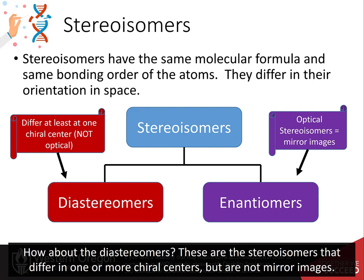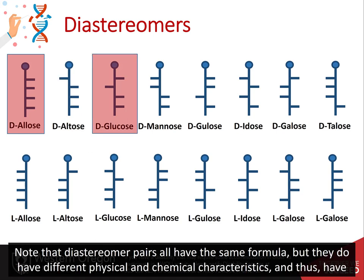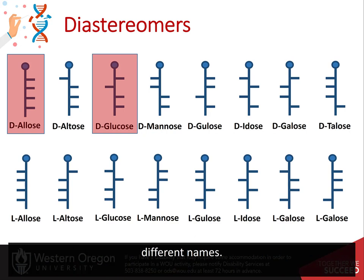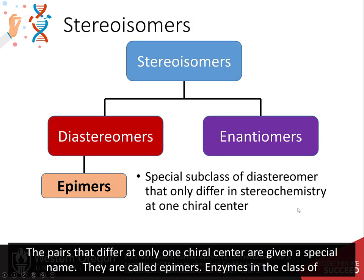How about the diastereomers? These are the stereoisomers that differ in one or more chiral centers, but are not mirror images. All of the other pairings on the slides are classified as diastereomers. Note that diastereomer pairs all have the same formula, but they do have different physical and chemical characteristics, and thus have different names. Some diastereomers differ only at one position, while others differ at multiple positions. The pairs that differ at only one chiral center are given a special name — they are called epimers.